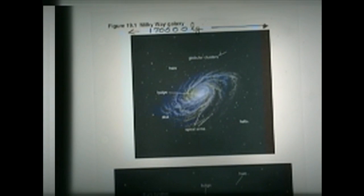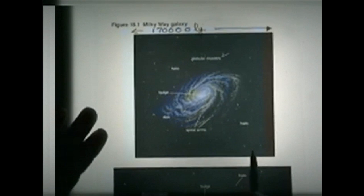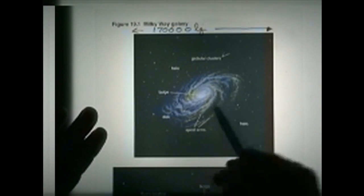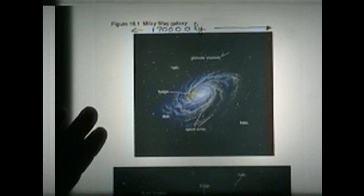We see what is called our galaxy, the Milky Way, which has the form of a disc with spiral arms.